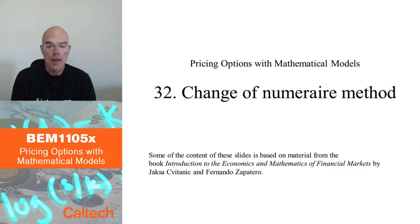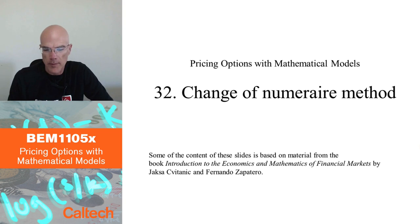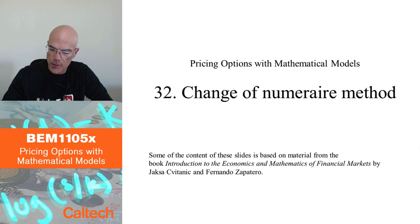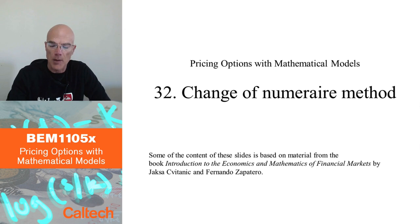We still have not priced an option on a bond and we want to be able to do that, at least in classical models like the Vasicek model. For that it will be helpful to know so-called change of numeraire methods, which I already mentioned when we were using the market model to price couplets. The numeraire refers to the asset that you are using to discount other assets — it's the unit of measurement.